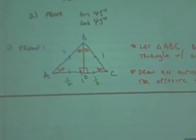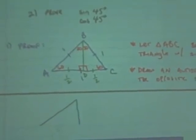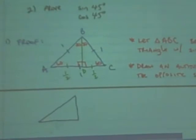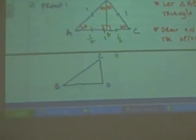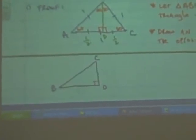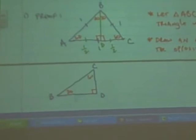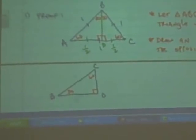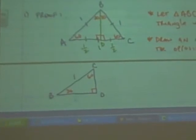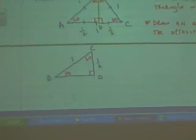If I call that point D at the bottom of that triangle, I'm going to pull one of those triangles out. How long is BC? One. How long is CD? One half. How long is BD? One. Oh, be careful. What are you going to do here?